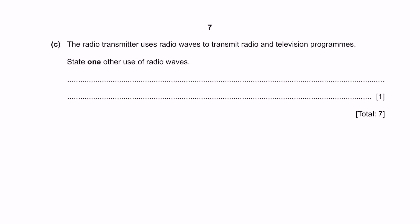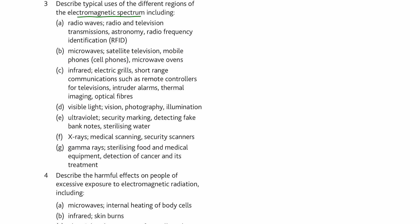Question C. The radio transmitter uses radio waves to transmit radio and television programs. State 1 other use of radio waves. Under electromagnetic spectrum for radio waves, other than radio and television transmissions, you can also use it for astronomy and radio frequency identification.